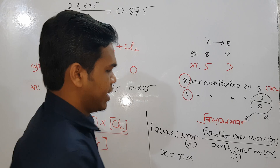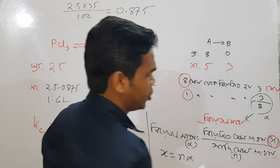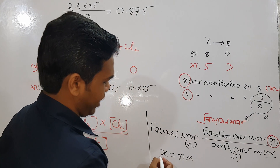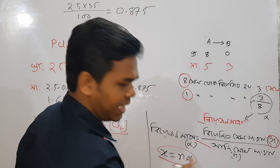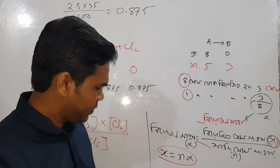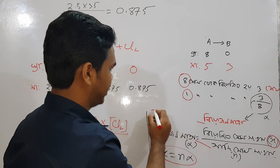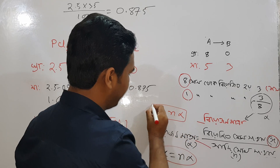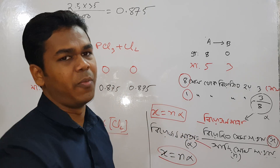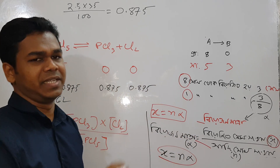So we have x to 2. What is x equal to alpha? Let's look at this question.